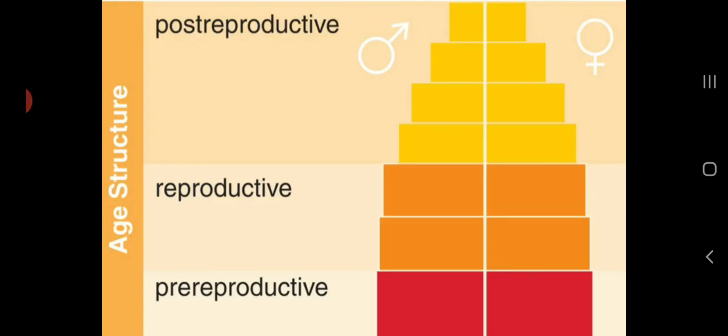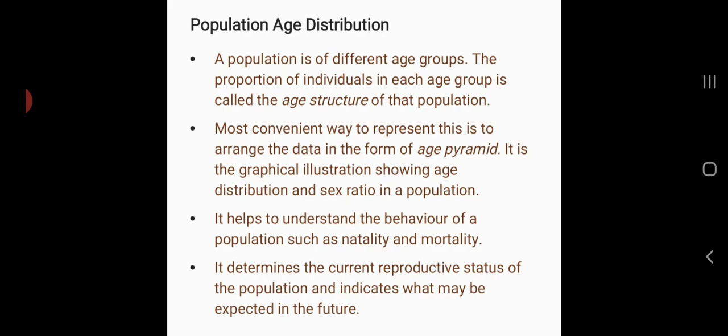In this lecture we will see what is population age distribution. Every population has different age groups, and the proportion of individuals in each age group determines the age structure of the population. The most convenient way to represent this is in the form of an age pyramid, which is a graphical representation showing age groups, number of individuals in each age group, and sex ratio of the population.